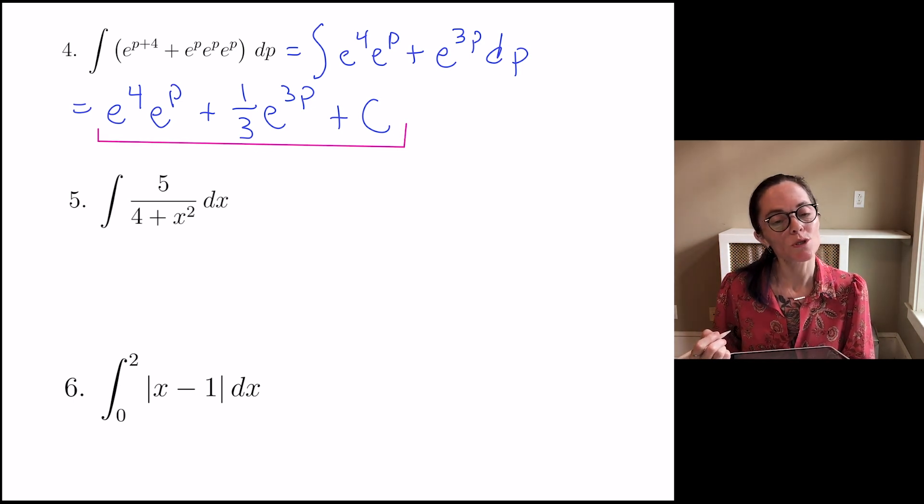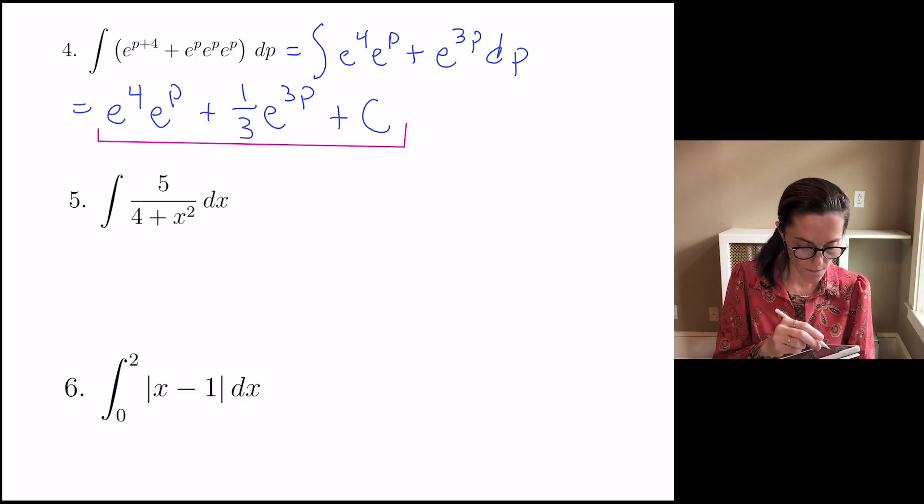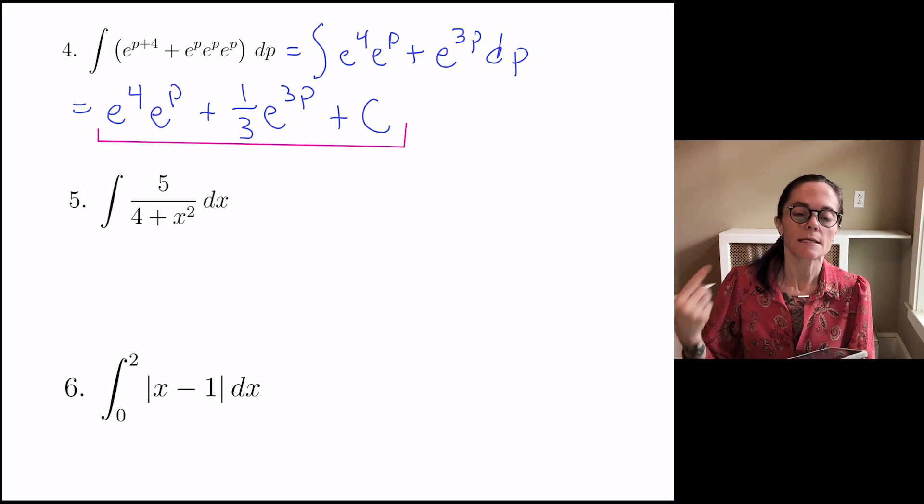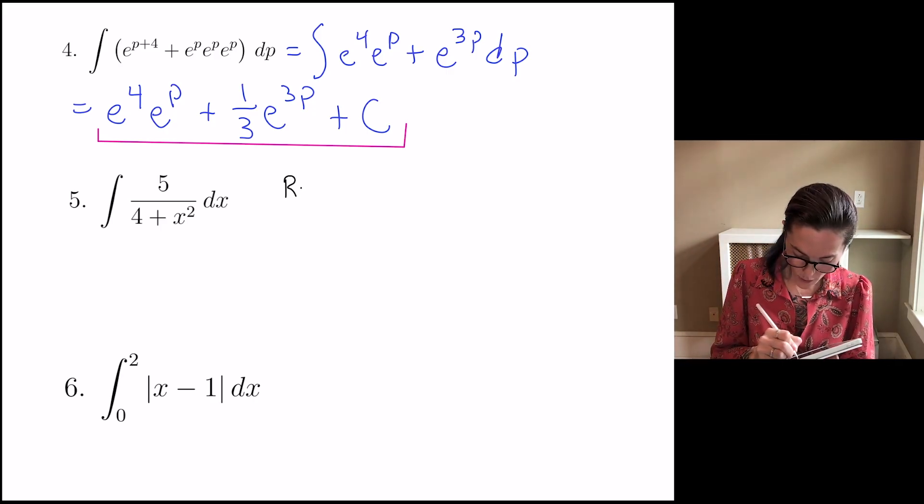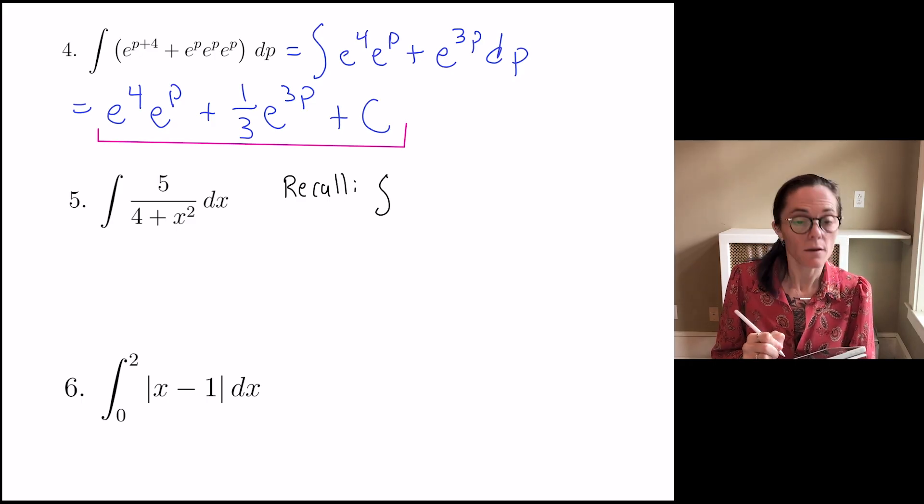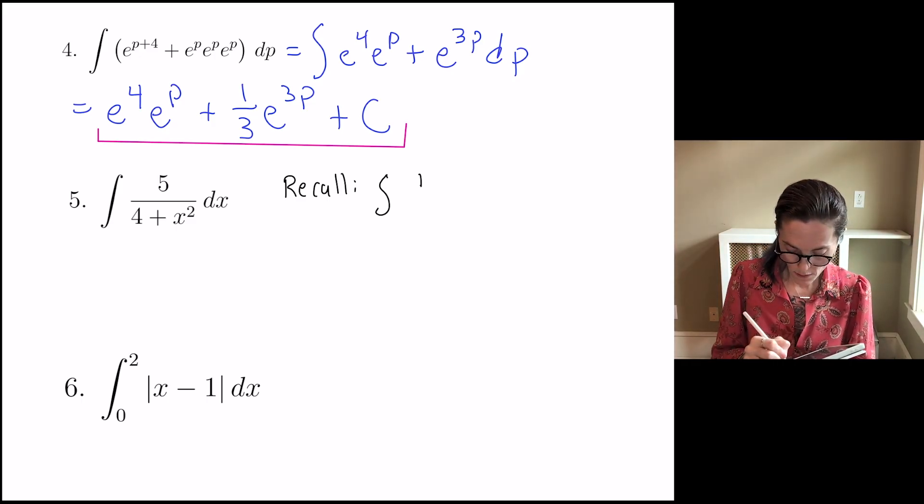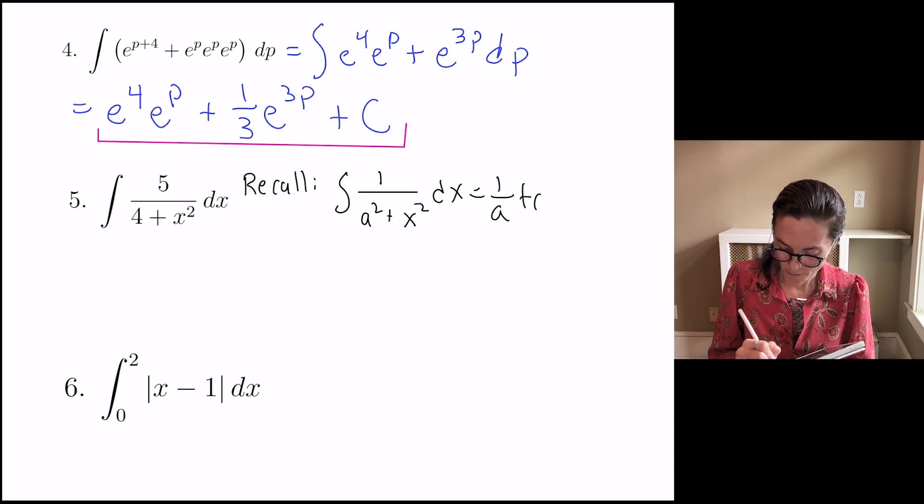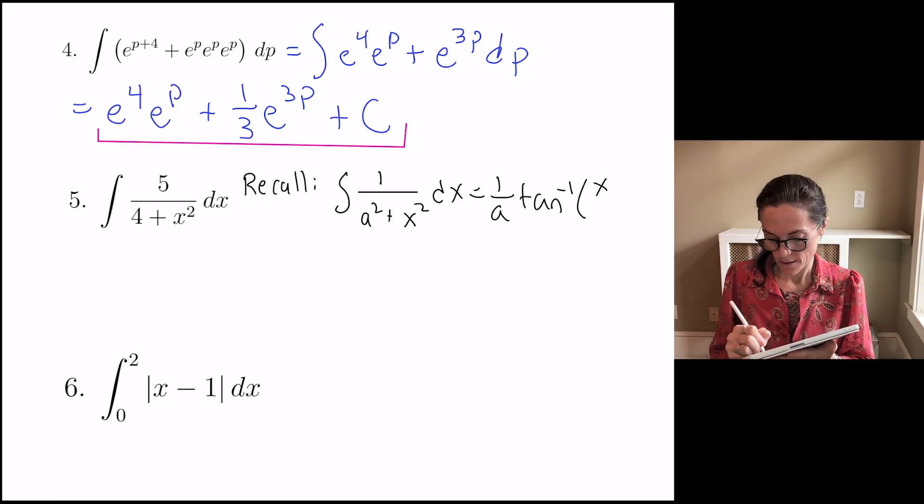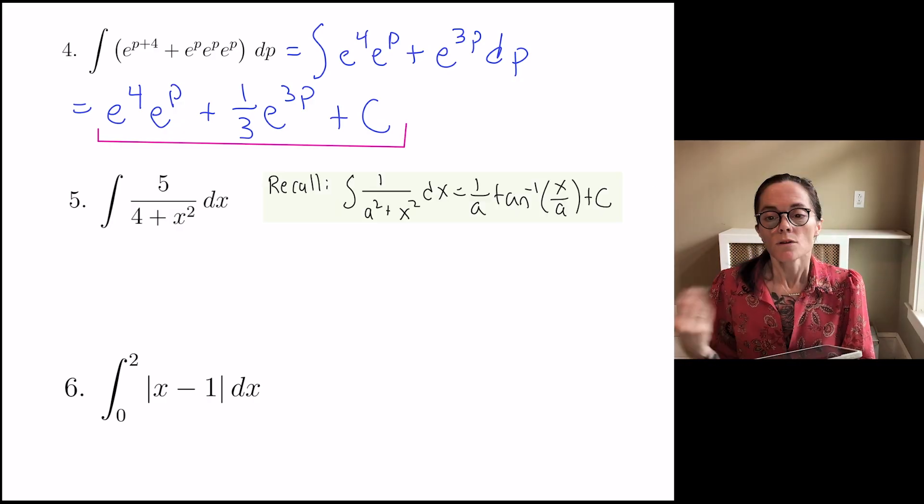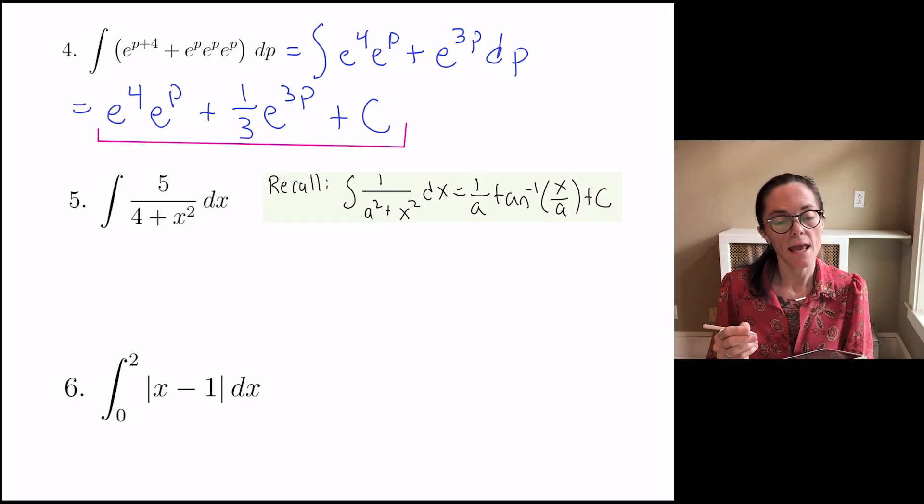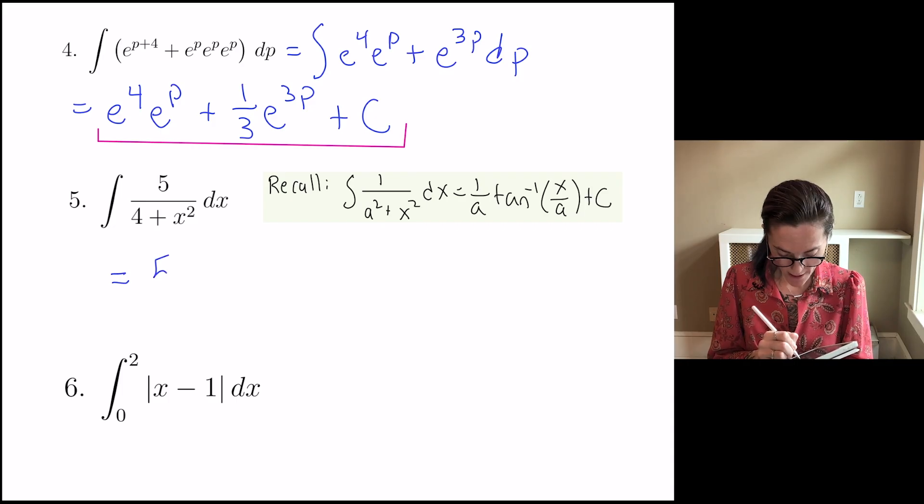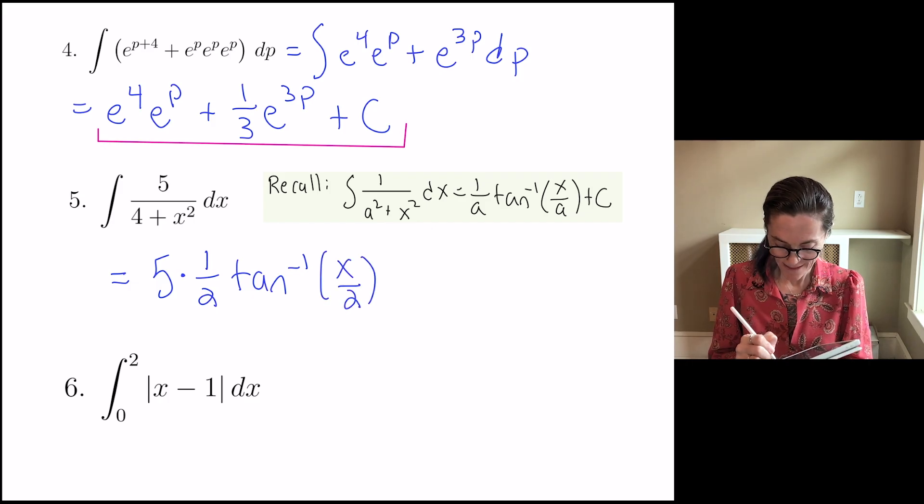The next one is pretty short, too. I consider this basic rules. It follows from something we discussed when we were learning integration by substitution. Maybe I will just write this here. Recall, this is an important formula: if we integrate 1 over a squared plus x squared dx, we get 1 over a tan inverse of x over a plus c. So really, that's what I need to use here. My a is 2, so the answer here, we have 5 times 1 over 2 tan inverse of x over 2 plus c.